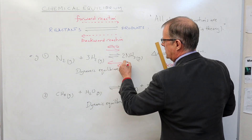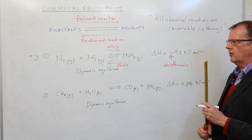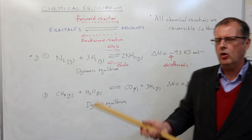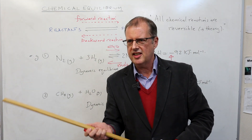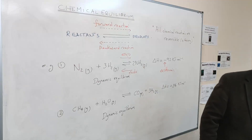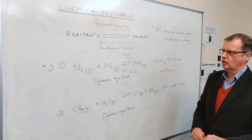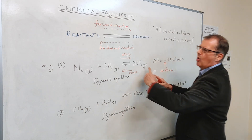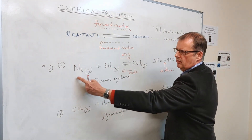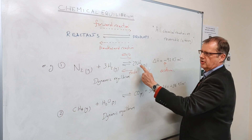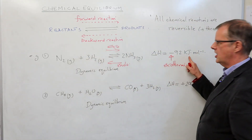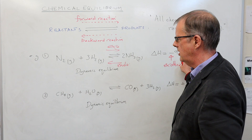A question that catches students out is: kilojoules per mole — per mole of what? When I say per mole they become unsure. The per mole means per mole of reaction as it's written. So: one mole of nitrogen, three moles of hydrogen, two moles of ammonia. The enthalpy change refers to the equation as written.